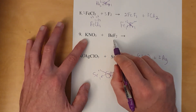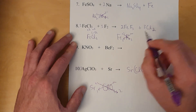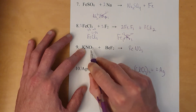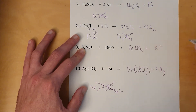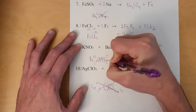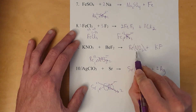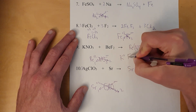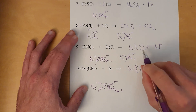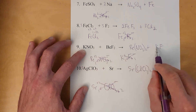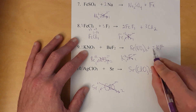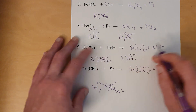The final double displacement reaction: potassium and beryllium switch places. Beryllium pairs with nitrate; potassium pairs with fluoride. Beryllium is +2 and nitrate is −1, so one beryllium and two nitrates — Be(NO₃)₂. Potassium is +1 and fluorine is −1 — one potassium, one fluorine — KF. Balance: one potassium vs. two nitrates — put a 2 on KF, then a 2 for potassium. Two fluorines, two fluorines; one beryllium, one beryllium. Balanced.